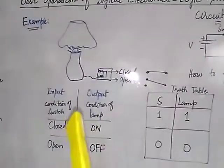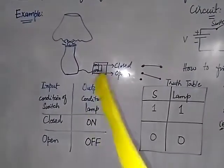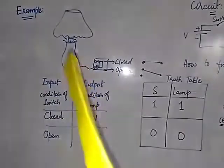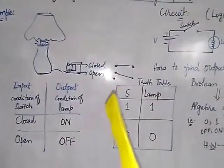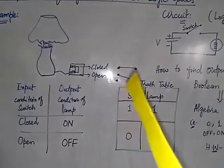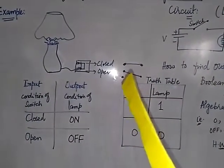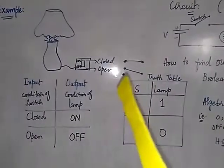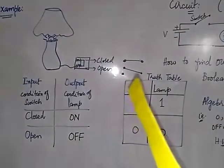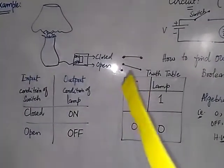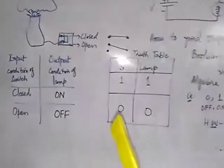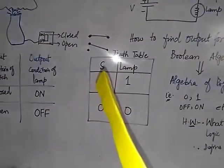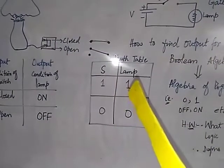For example, we have a lamp and a switch. We consider the condition of the switch as input and the condition of the lamp or the bulb as output. If the switch is closed, both the connections are joined, the lamp is on. But if the switch is open, it is not closed, not connected to the other point, the lamp is off. We can write it in the form of a logic state like S for switch and lamp.